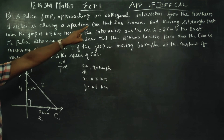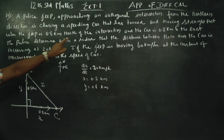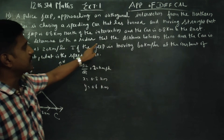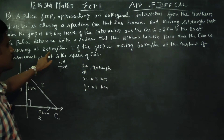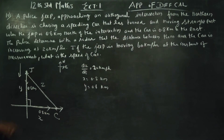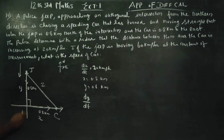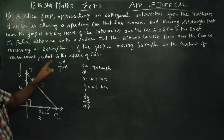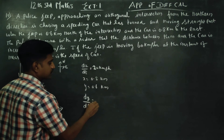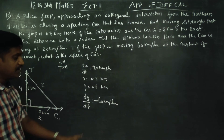The police jeep is approaching the orthogonal intersection from the north direction and chasing the speeding car that has turned and is moving east. The jeep is moving at 60 km per hour, so dy/dt = -60 km per hour. It is negative because the jeep is moving towards the intersection — moving towards means negative.